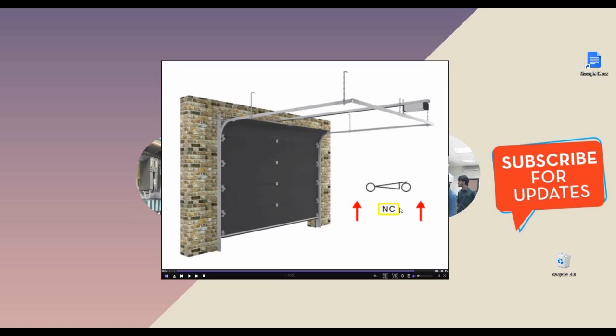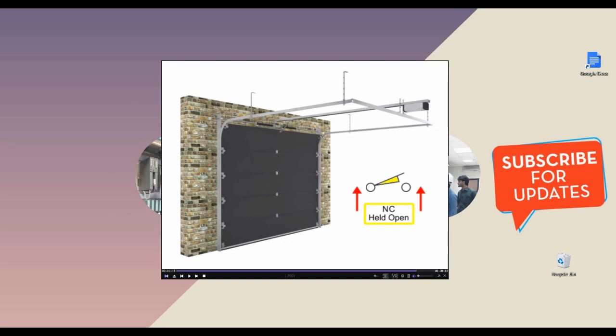When it touches the ground floor, the NC contact will now open — because at the start it was normally closed, we are getting the NC contact. We configure that NC contact so that when it touches the down floor, the limit switch gives an output, putting the NC contact in the open position, which cuts off the supply to the motor.